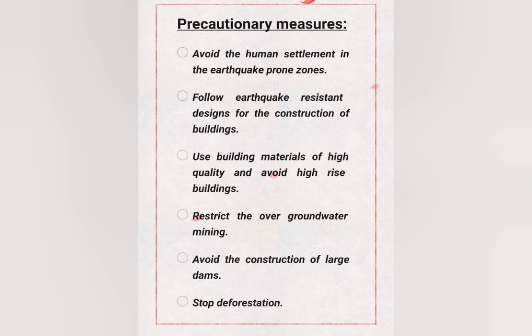Precautionary measures to control earthquakes: natural disasters cannot be stopped, but we have to alert ourselves. The measures include: avoid human settlements in earthquake-prone areas; use high-quality building materials and avoid high-rise buildings; restrict groundwater mining; and avoid construction of large dams and stop deforestation. These are the precautionary measures to control earthquake.